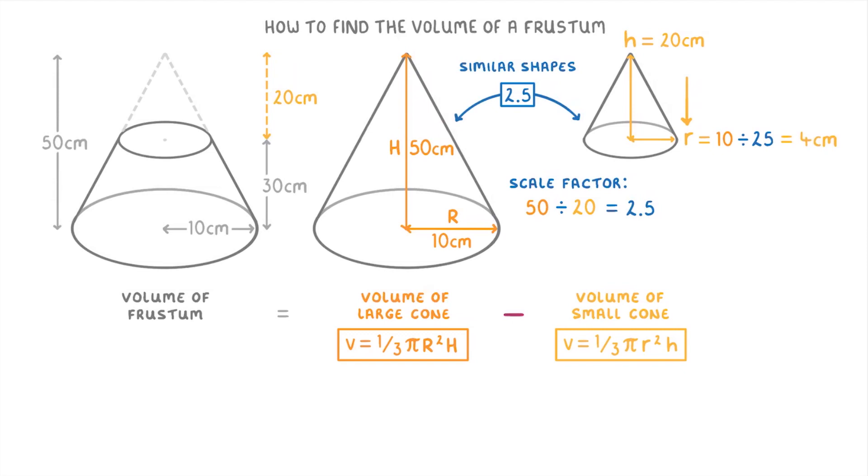Okay, so we've now done the majority of the hard work which is finding out our unknown radiuses and heights. Now all we have to do is plug them all into the formula. So the volume of the frustum is equal to the volume of the large cone, so one-third times pi times a radius of 10 squared times the height of 50.